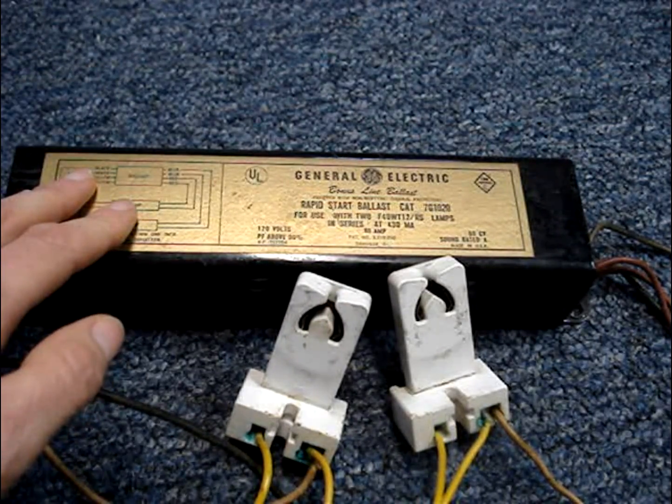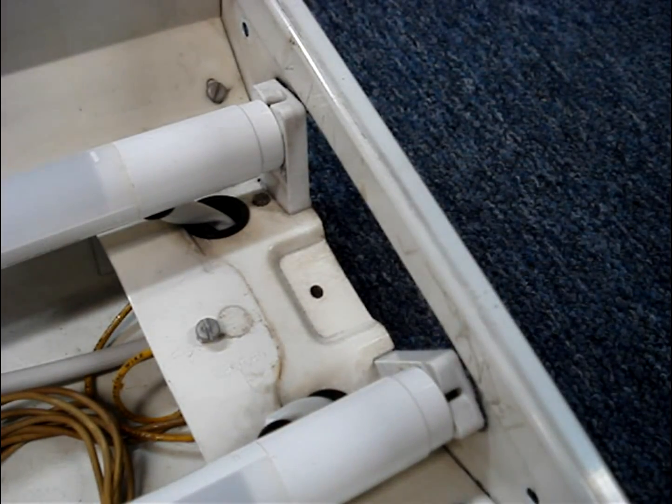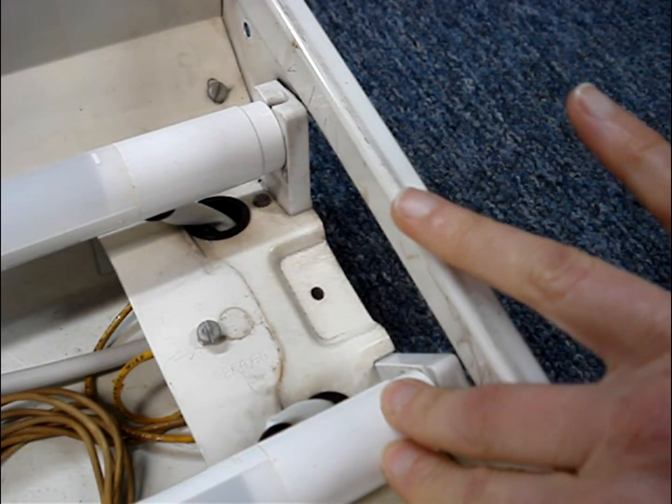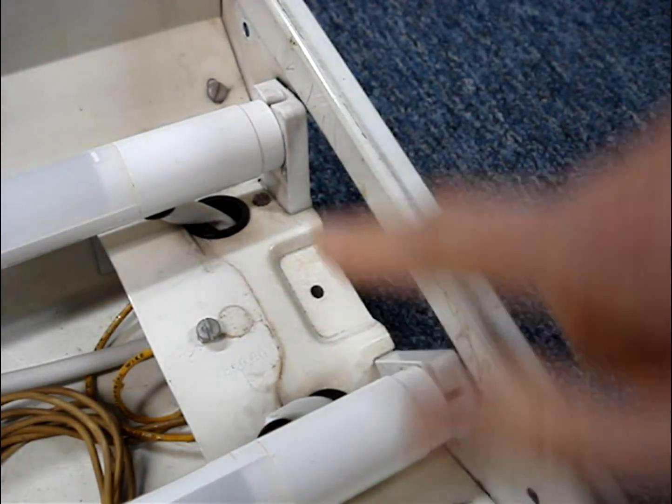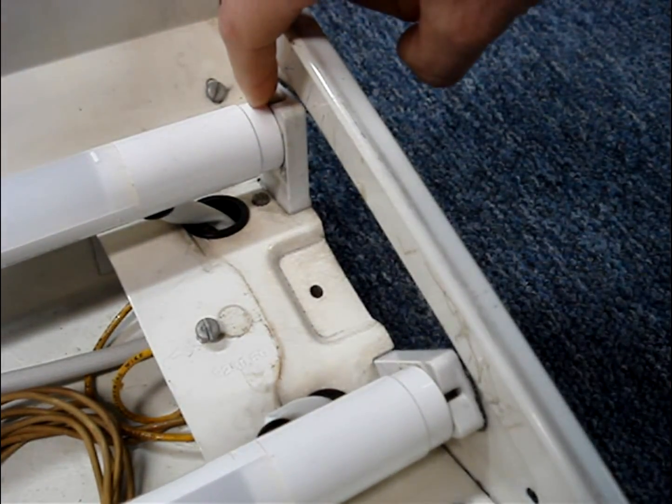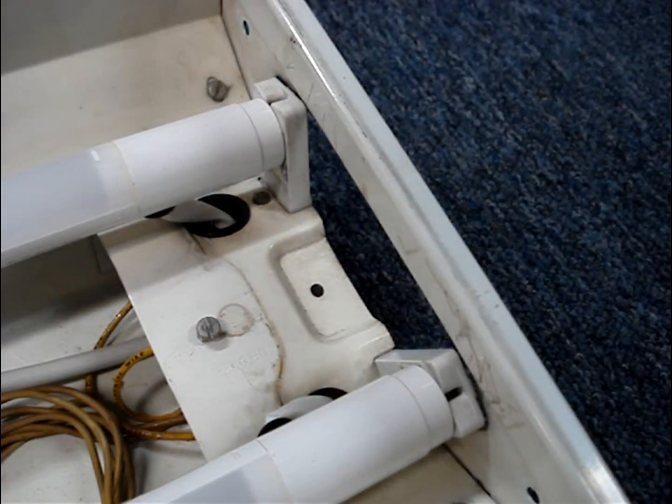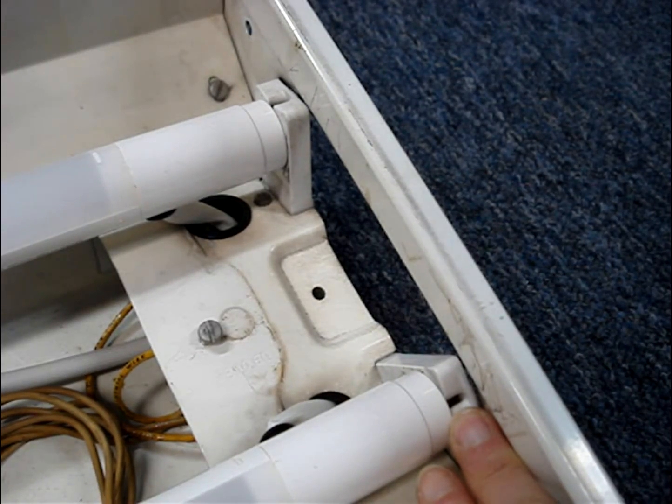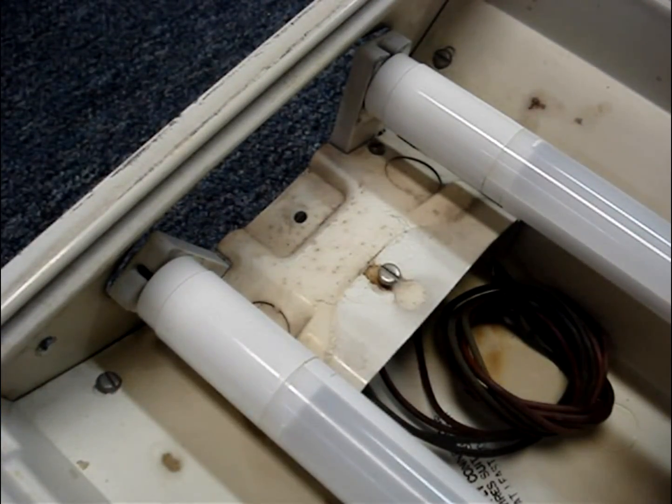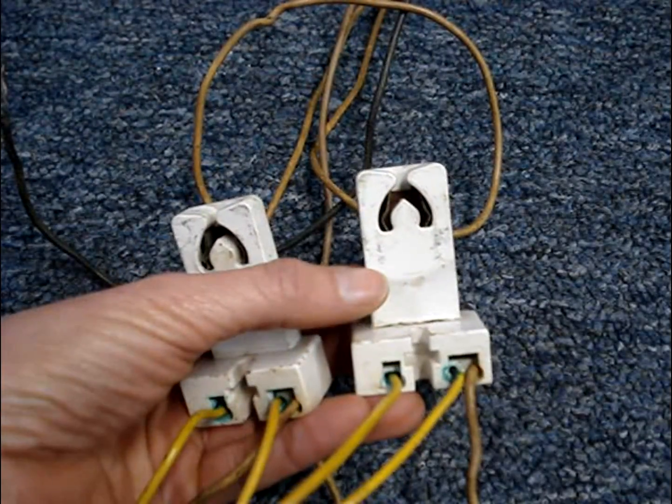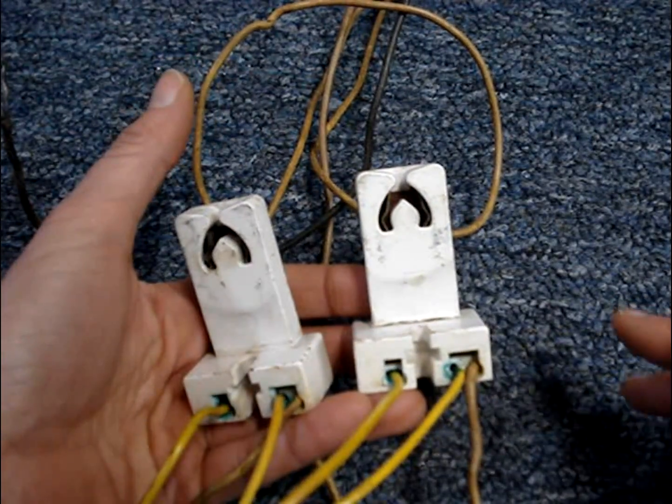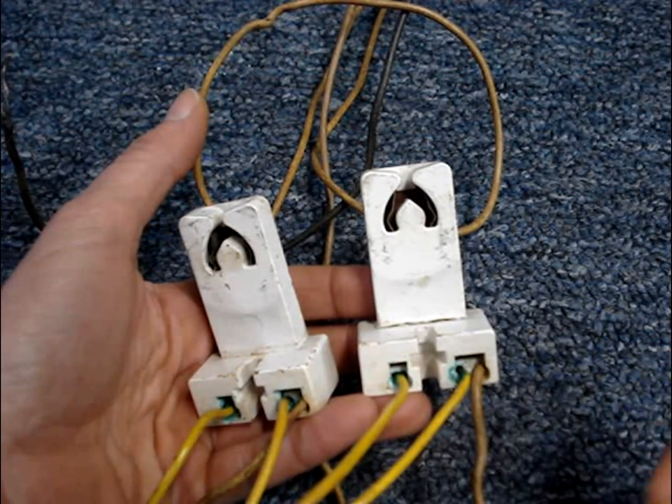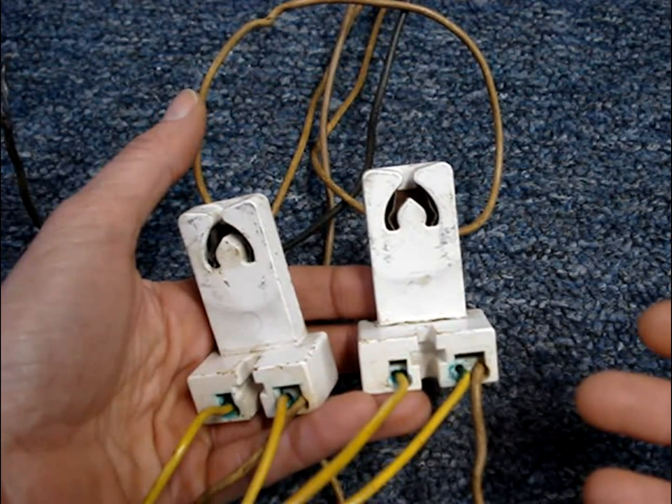The ballast gets removed. Depending upon the brand that you buy, they may apply 120 volts to the sockets on just one end of the tubes. Some brands you'll wire the tombstones on one end of the tubes with the hot and the other end with the neutral. You'll probably have to figure out whether your tombstones are the shunted or non-shunted kind and you may have to replace them.